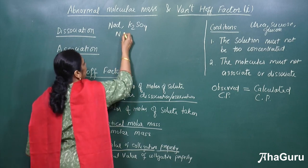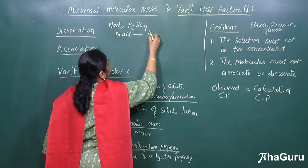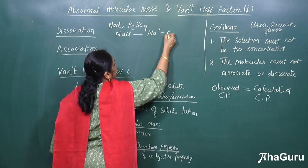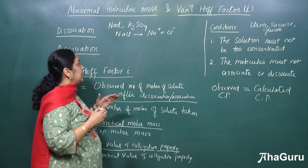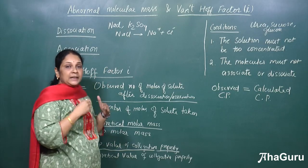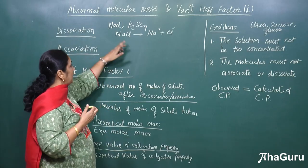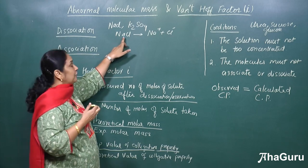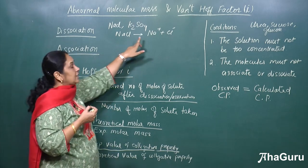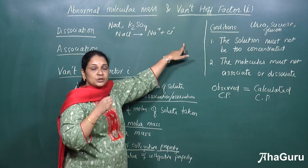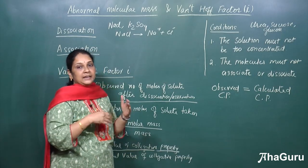NaCl will dissociate into Na⁺ plus Cl⁻. We know that colligative properties are completely dependent on the number of particles in solution. When we take NaCl, we think it is one particle, but it has dissociated into two particles. So what will happen to the colligative property? It will vary — it will increase.